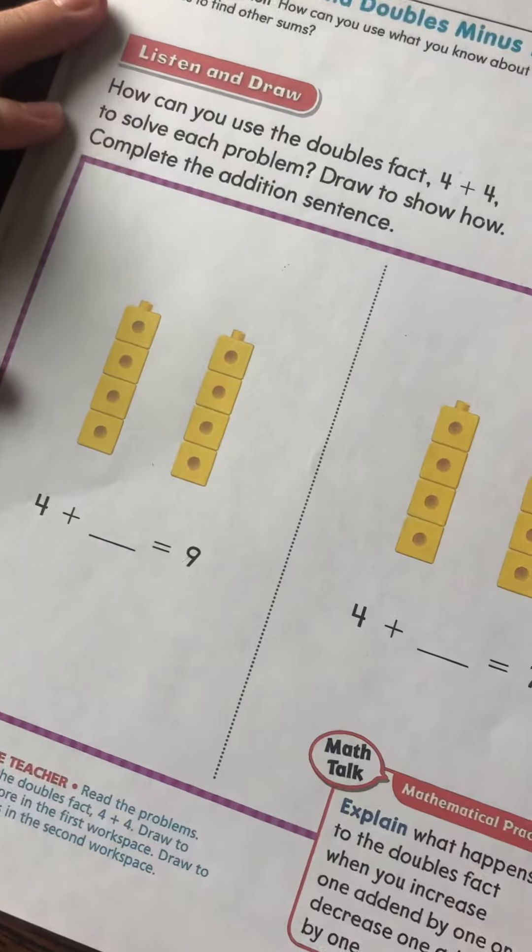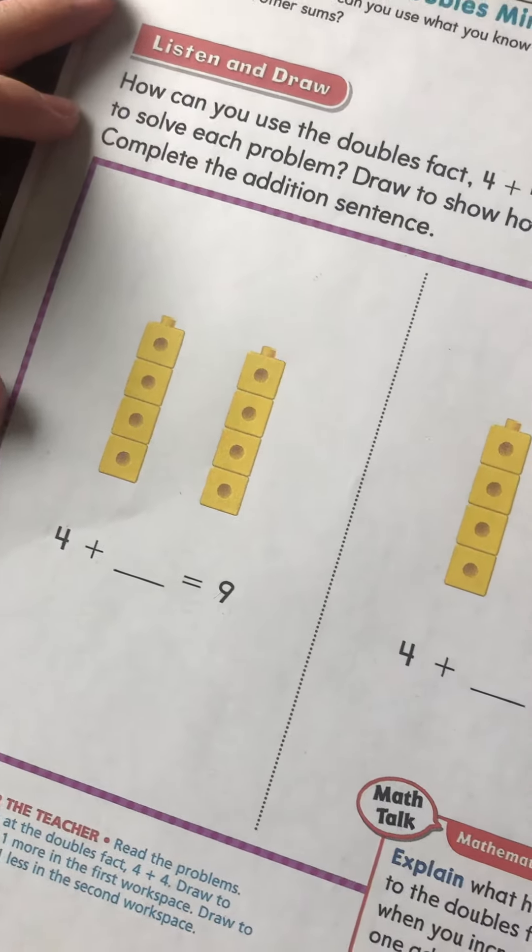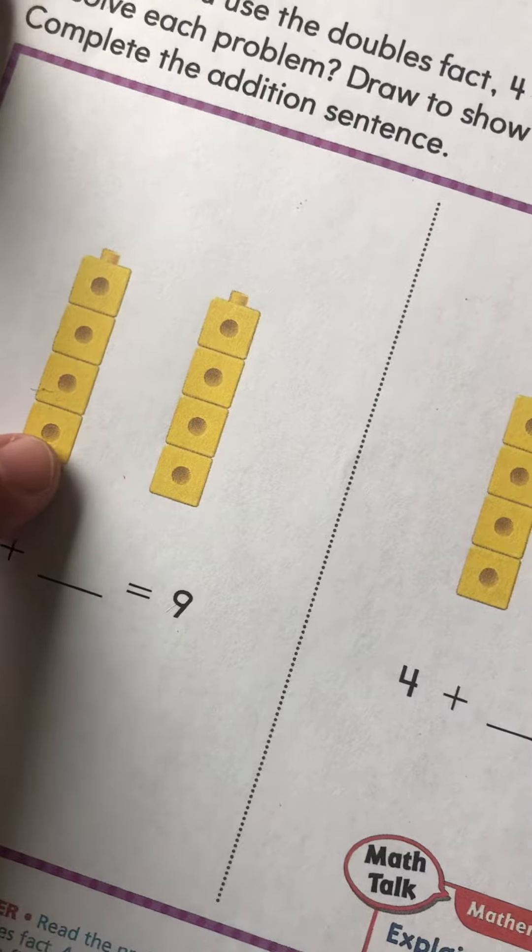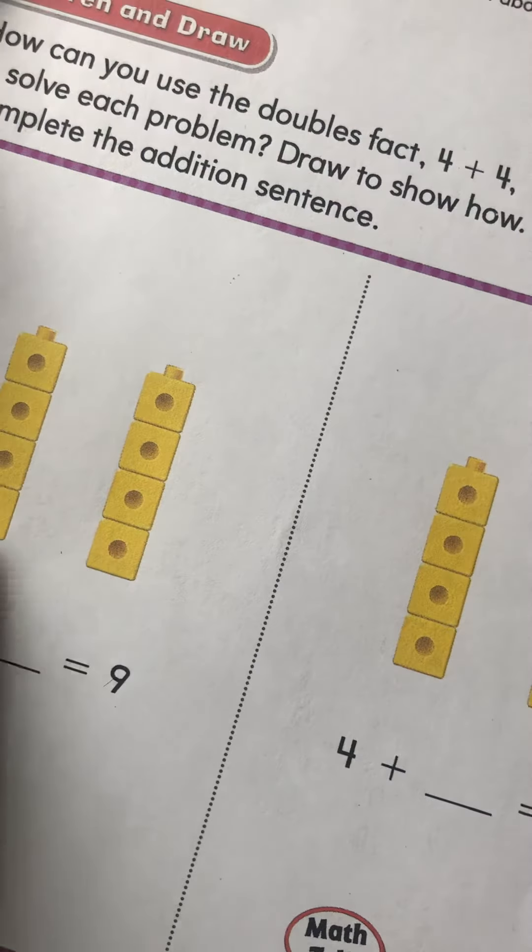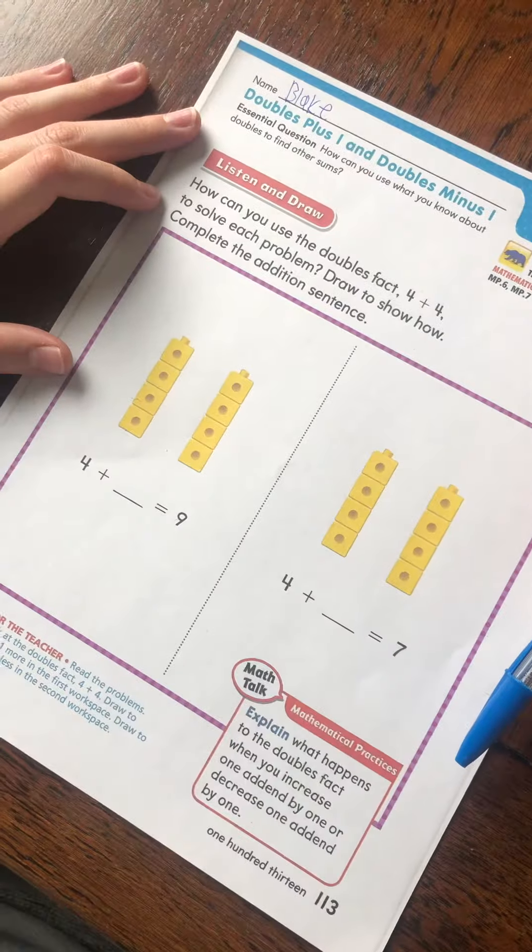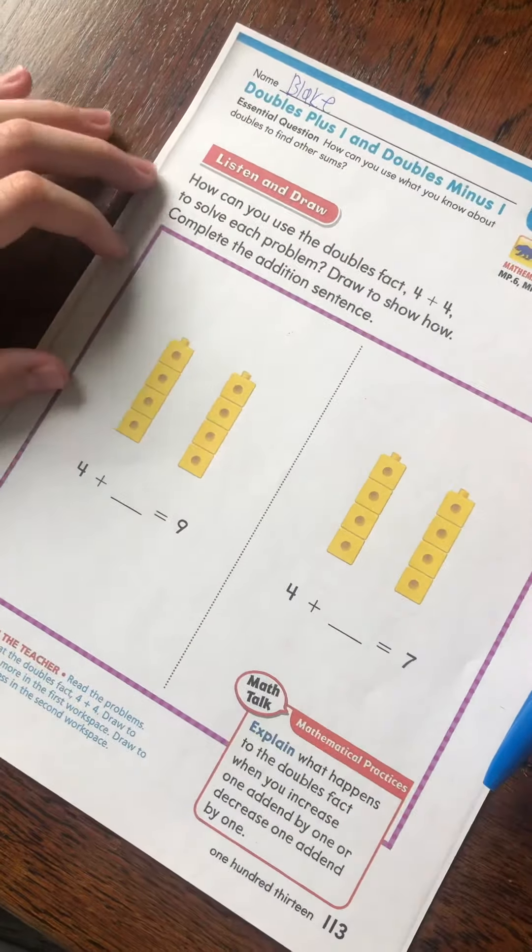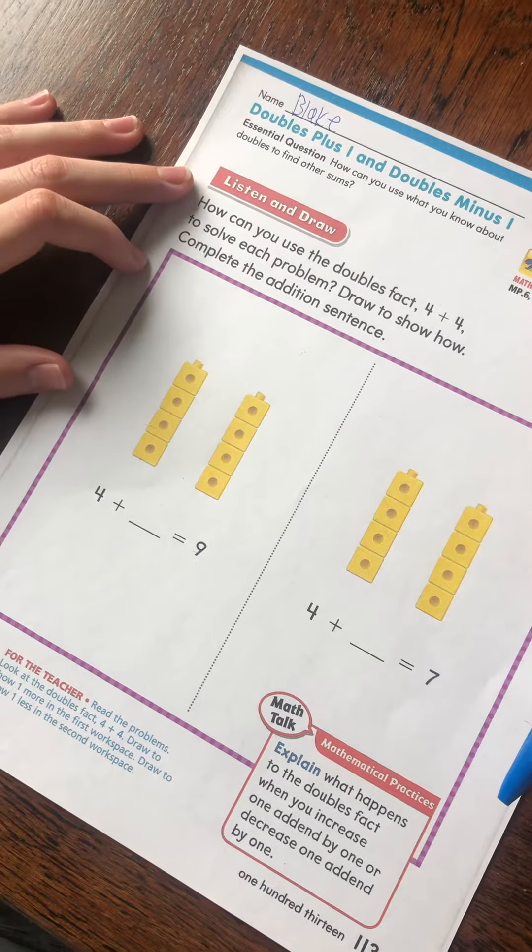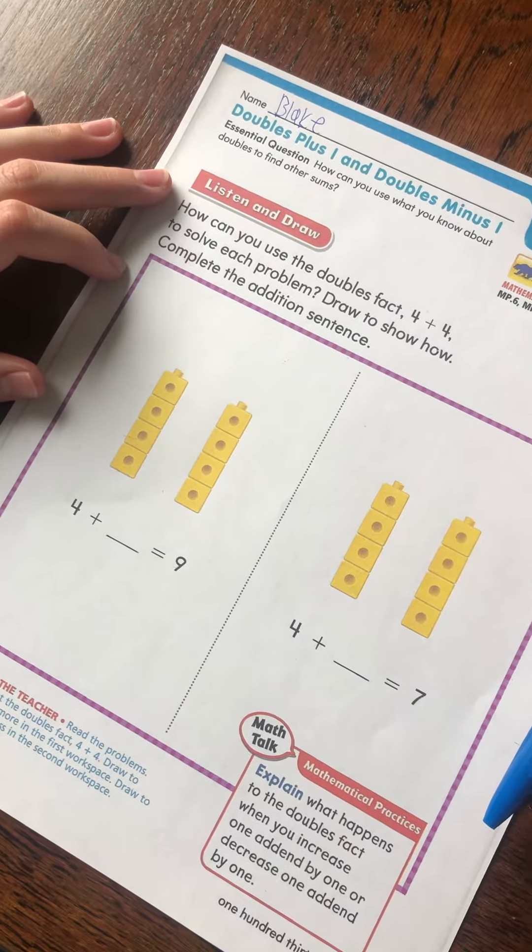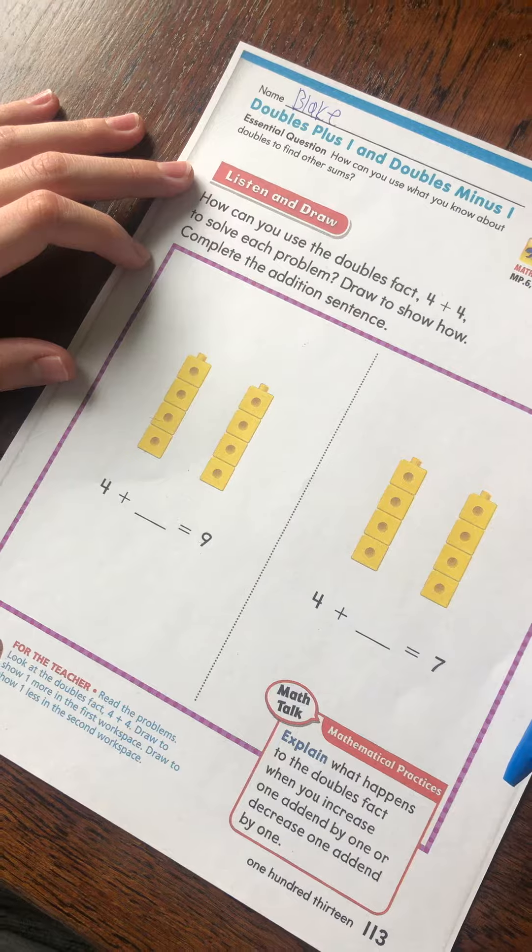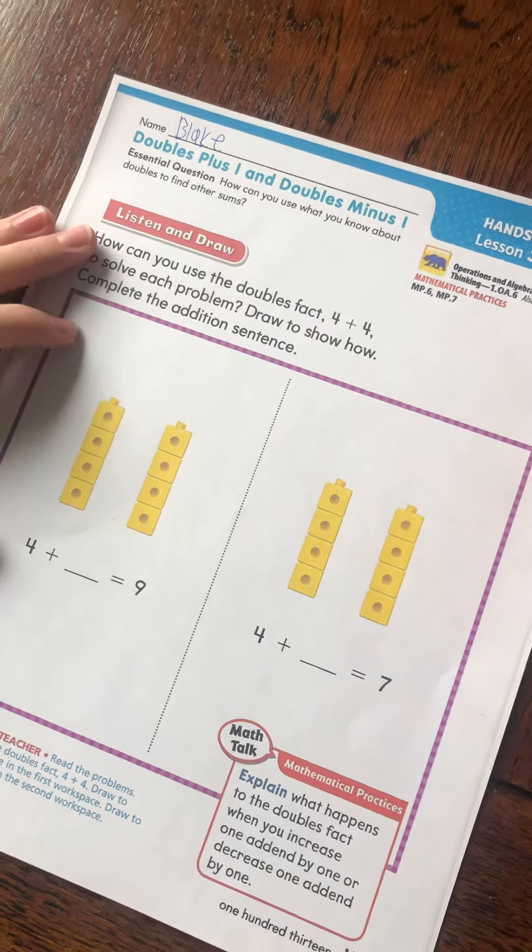Okay, so 4 plus blank equals 9. And they gave us 4 blocks and then 4 blocks. And we know 4 plus 4 equals 8. So we need to get 9, which is 1 more than 8. So draw 1 more cube on one of those towers.